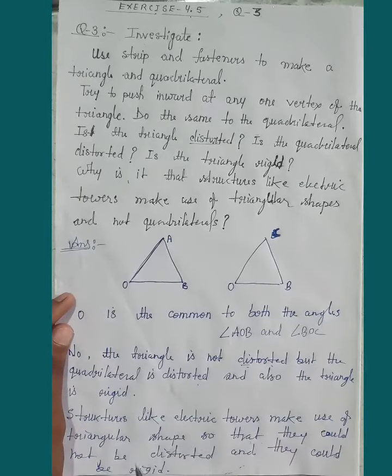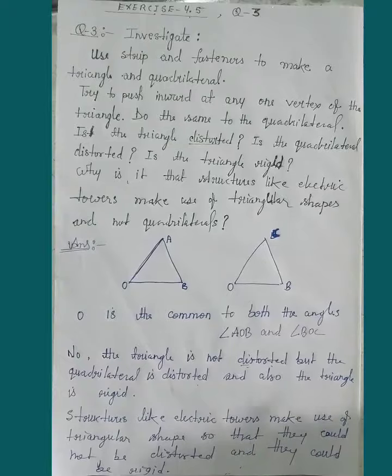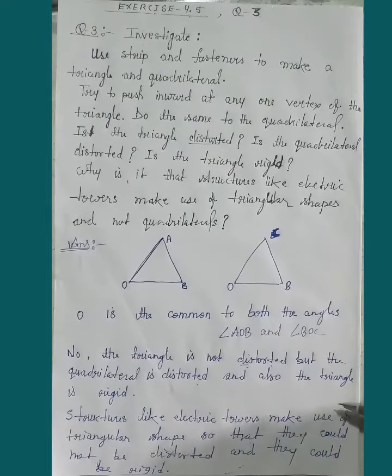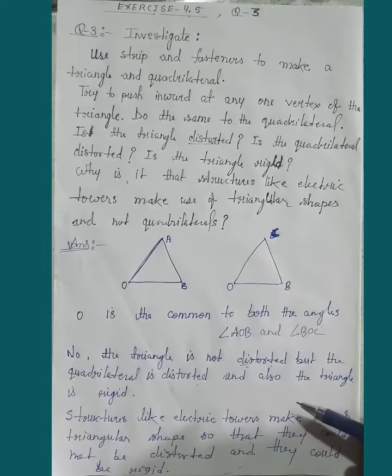Structures like electric towers make use of triangle shapes because triangles resist change. Electric towers use triangle shapes for this reason.